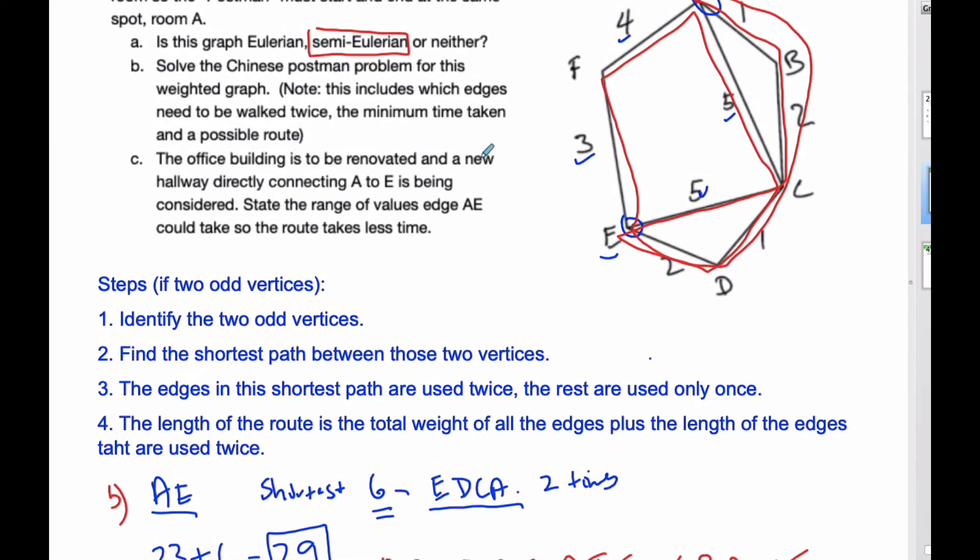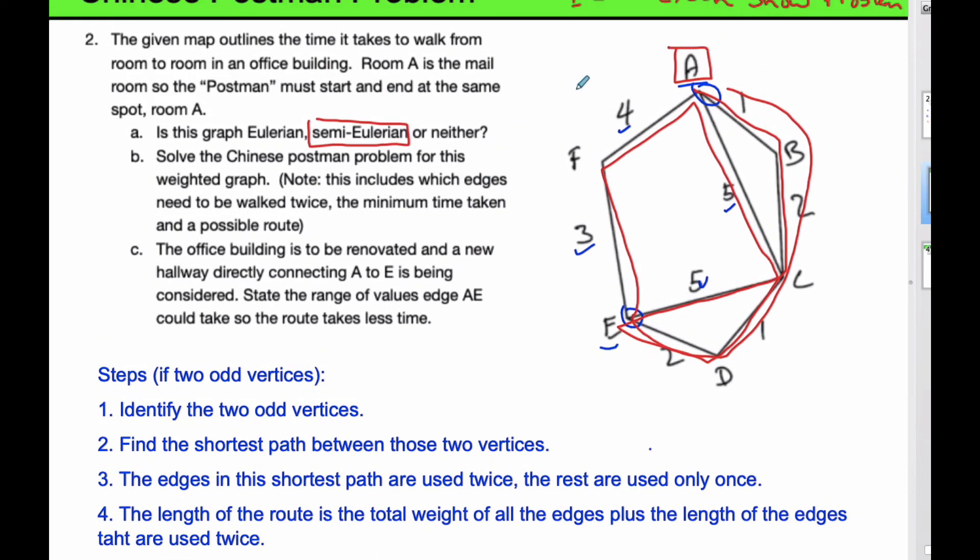A new hallway directly connects A to E is being considered. We're going to do a path that goes directly from A to E. State the range of values of edge AE so that the route takes less time. What happens now, we have an even degree and an even degree.